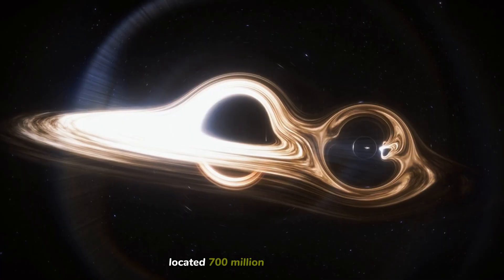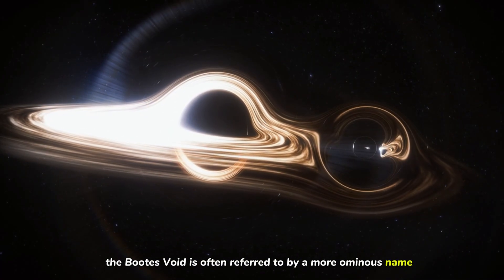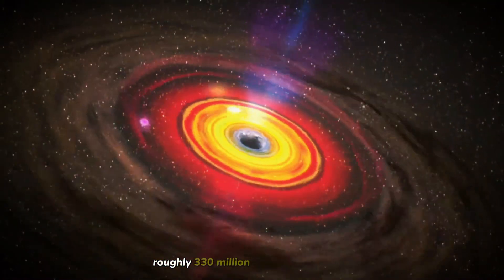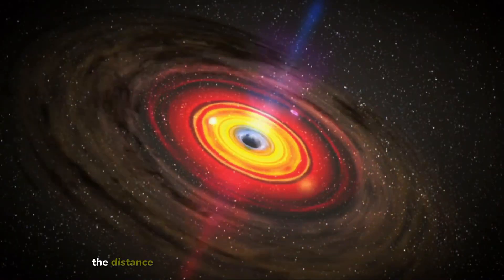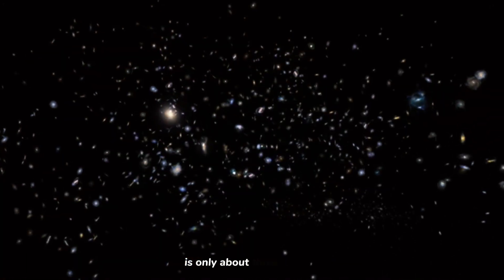Located 700 million light years away, the Boötes Void is often referred to by a more ominous name: the Great Nothing. It is a sphere of emptiness, roughly 330 million light years in diameter. To put that into perspective, the distance from Earth to the edge of our observable solar system is only about three light years.